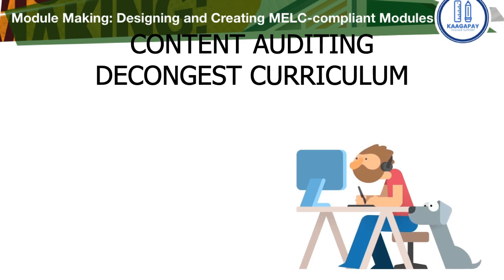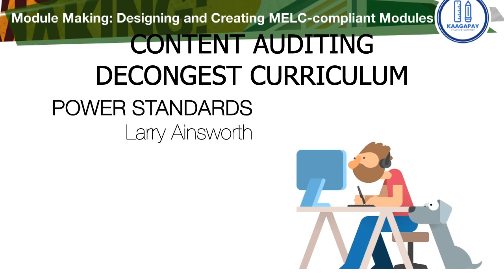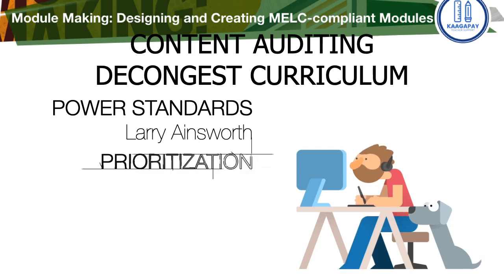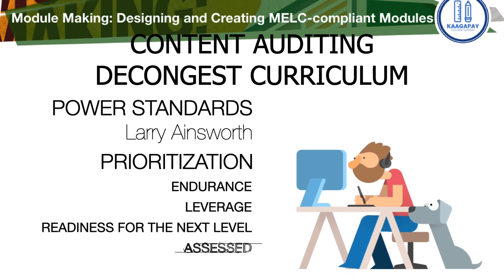Our curriculum is overloaded. One of the ways that we can help in decongesting and auditing our content is by looking at what Larry Ainsworth suggests: the power standards. The power standards focus on prioritizing our content. There are four things he has mentioned. First is endurance — that our content be lasting content beyond one grade level.